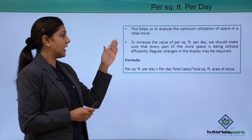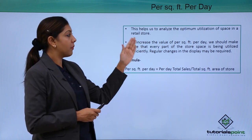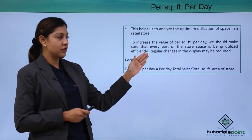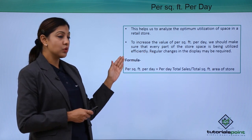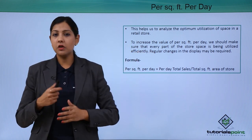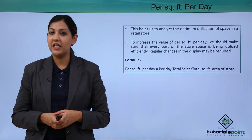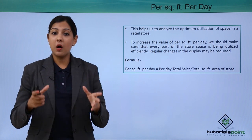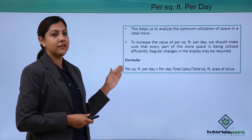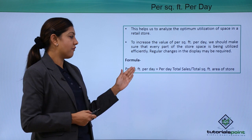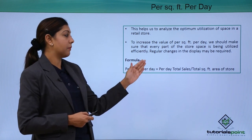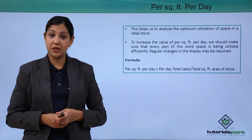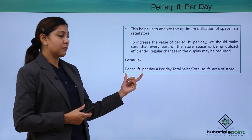Each and every part of the store needs to be occupied. To increase the value of per square feet per day, we should make sure that every part of the store space is being utilized efficiently. Visual merchandising may need to change every single day for optimum utilization of space. The formula is: Per Square Feet Per Day = Total Daily Sales ÷ Total Square Feet Area of the Store.